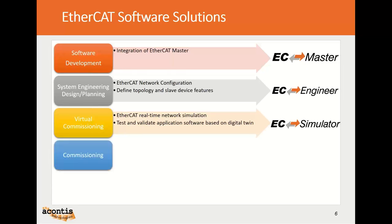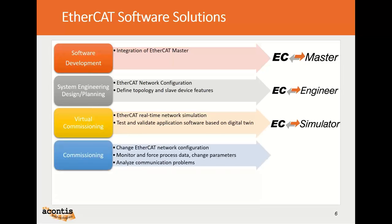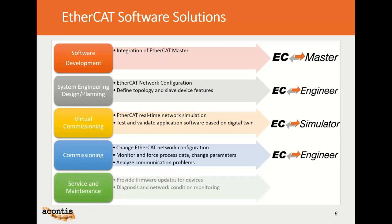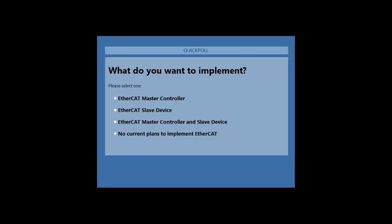During commissioning, the diagnosis features of EasyEngineer are a great support. The EasyLizer tool helps maintenance staff provide slave firmware updates and diagnose problems. Now is a good time to ask: what do you want to implement? Are you looking to implement an EtherCAT master controller, an EtherCAT slave device, maybe both, or do you currently have no plans to implement EtherCAT at all? We'll leave that open for a few seconds.